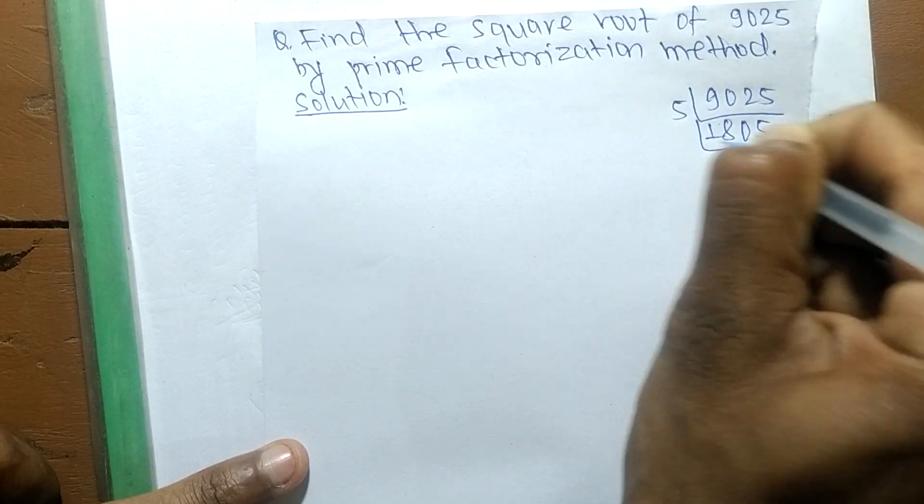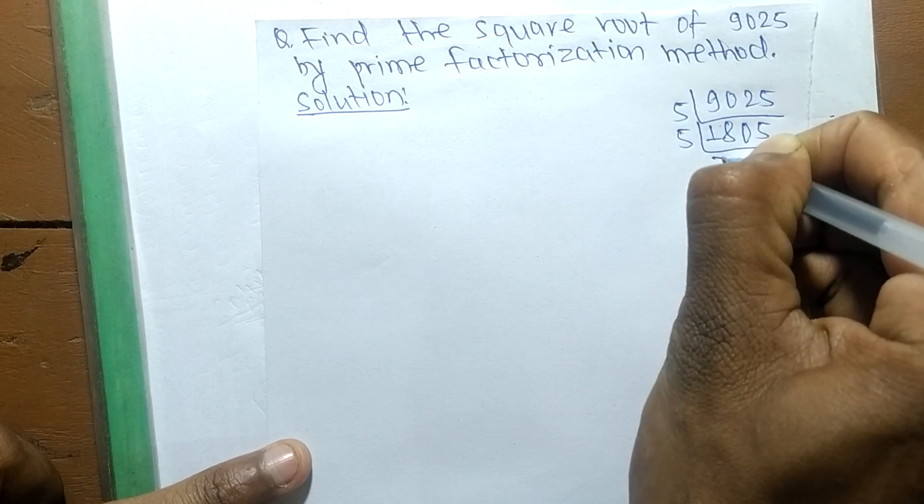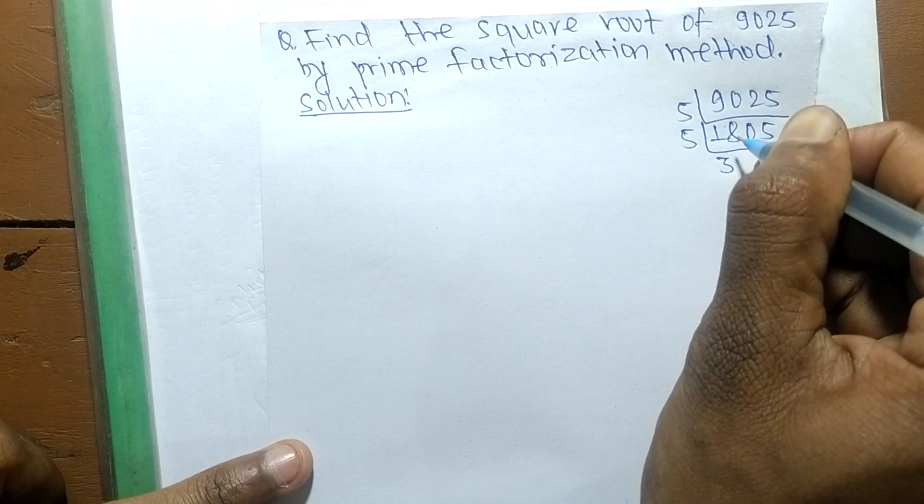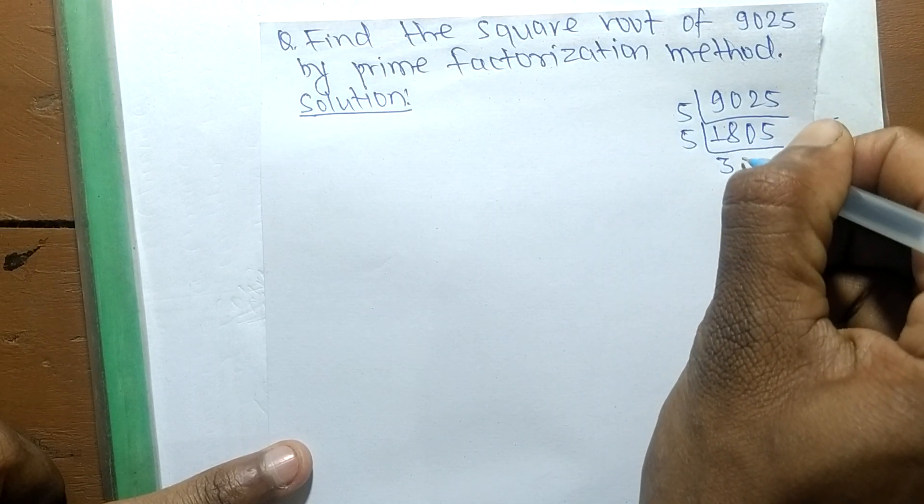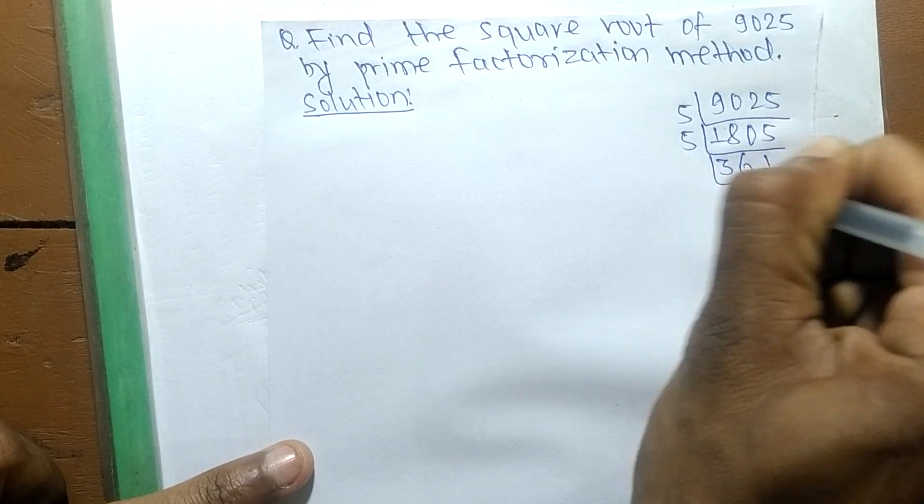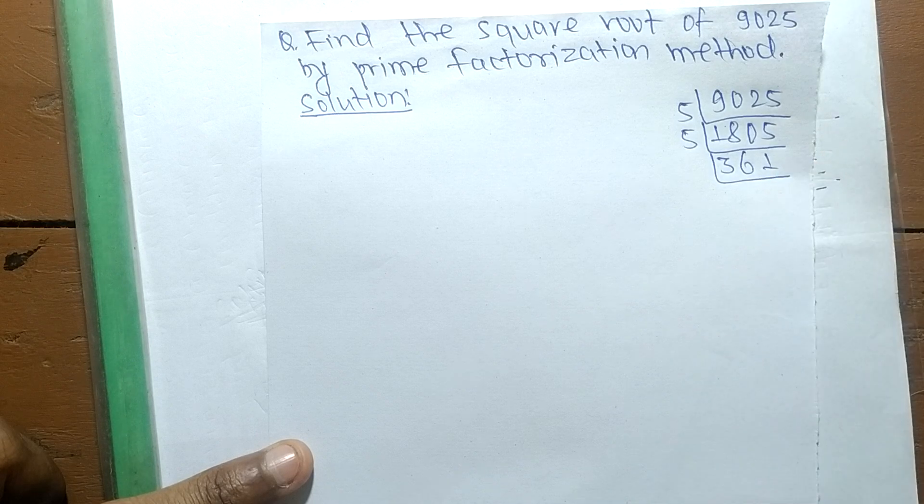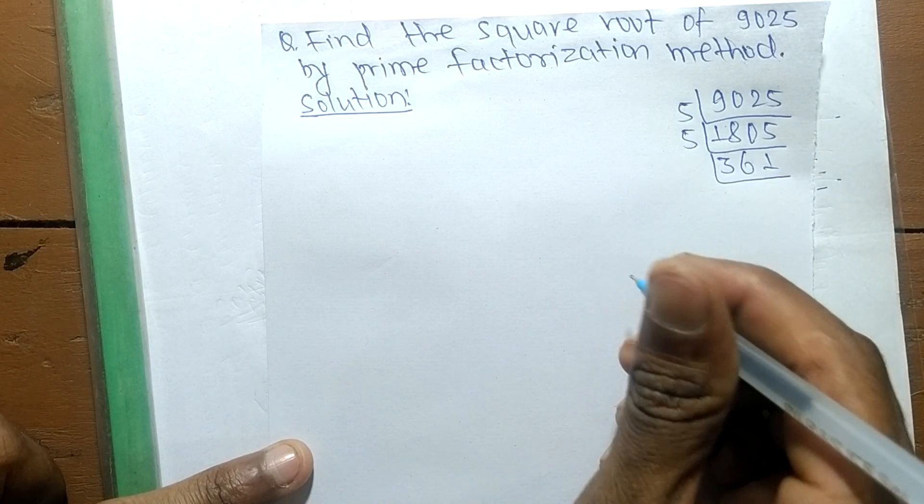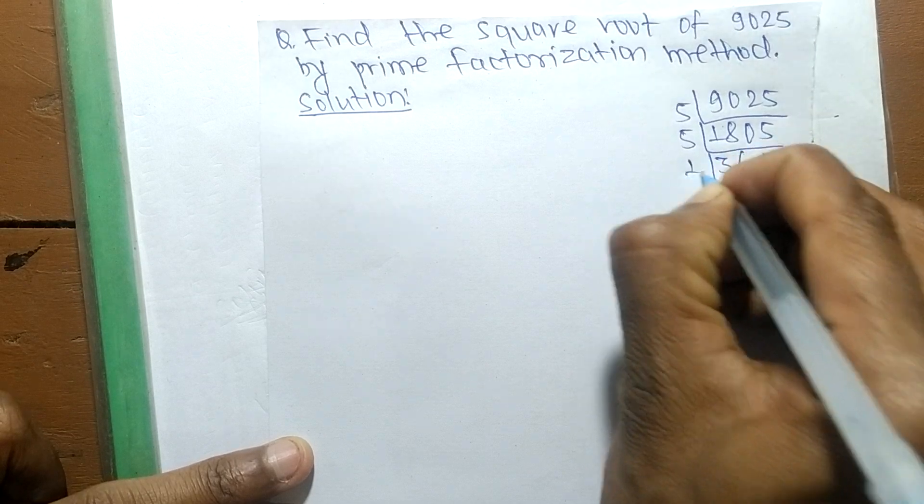5 times 5 is 25. Then 5 times 3 is 15, remainder 3. 30 divided by 5: 5 times 6 is 30. 5 ones are 5. So now we have 361, which is equal to